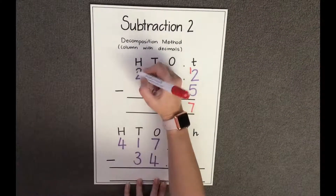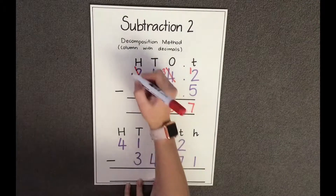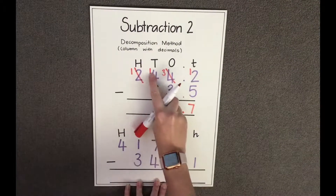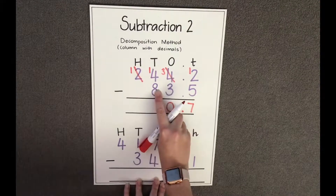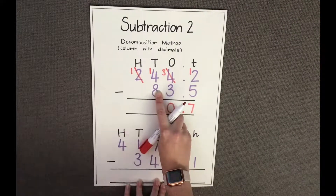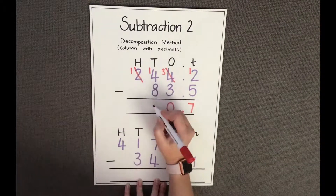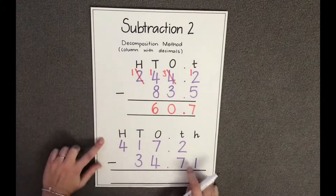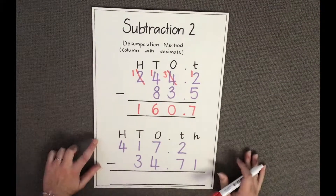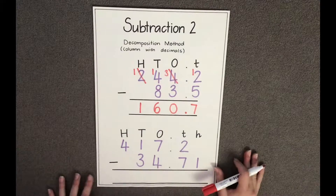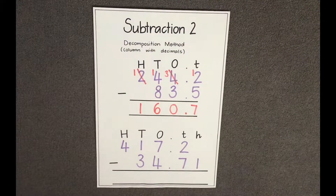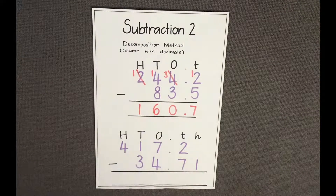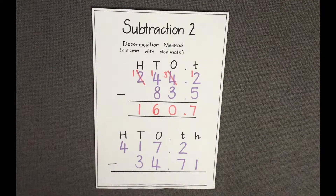I have to borrow from my hundreds column, which leaves the hundreds with one hundred and leaves the tens with fourteen tens take away eight tens. Fourteen tens take away eight tens is six tens, and finally one hundred take away no hundreds is one hundred. Therefore, the answer to 244.2 take away 83.5 is one hundred and sixty point seven.